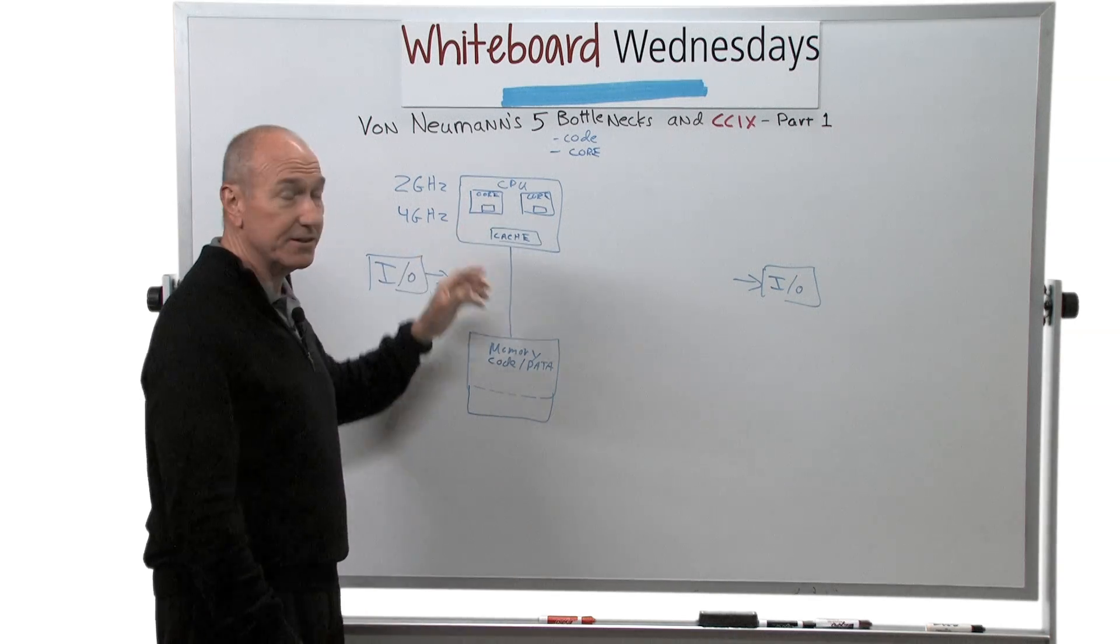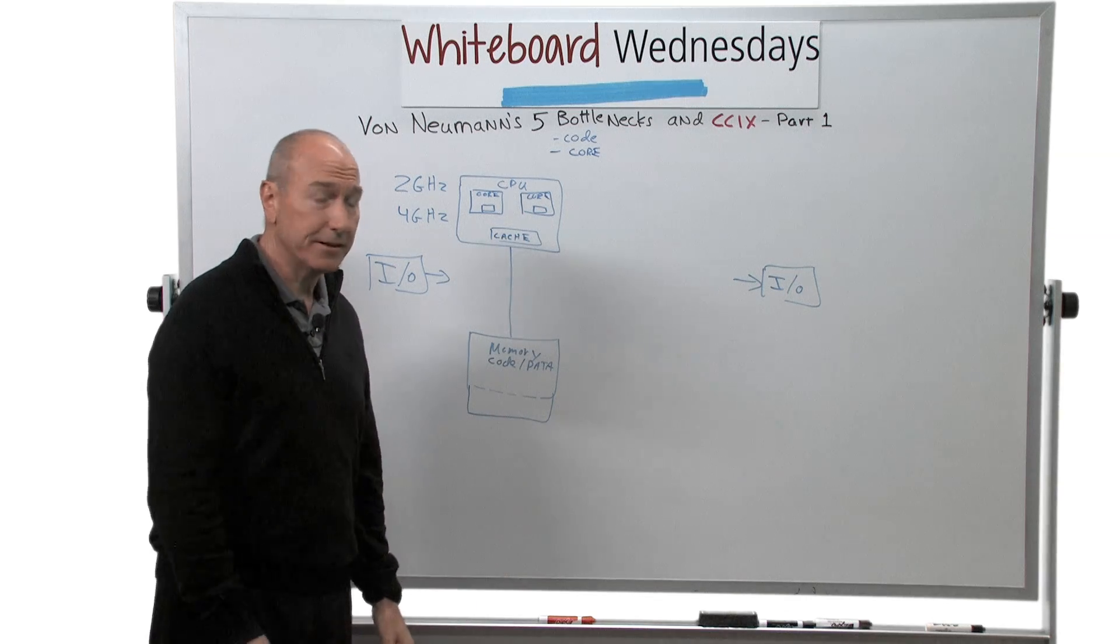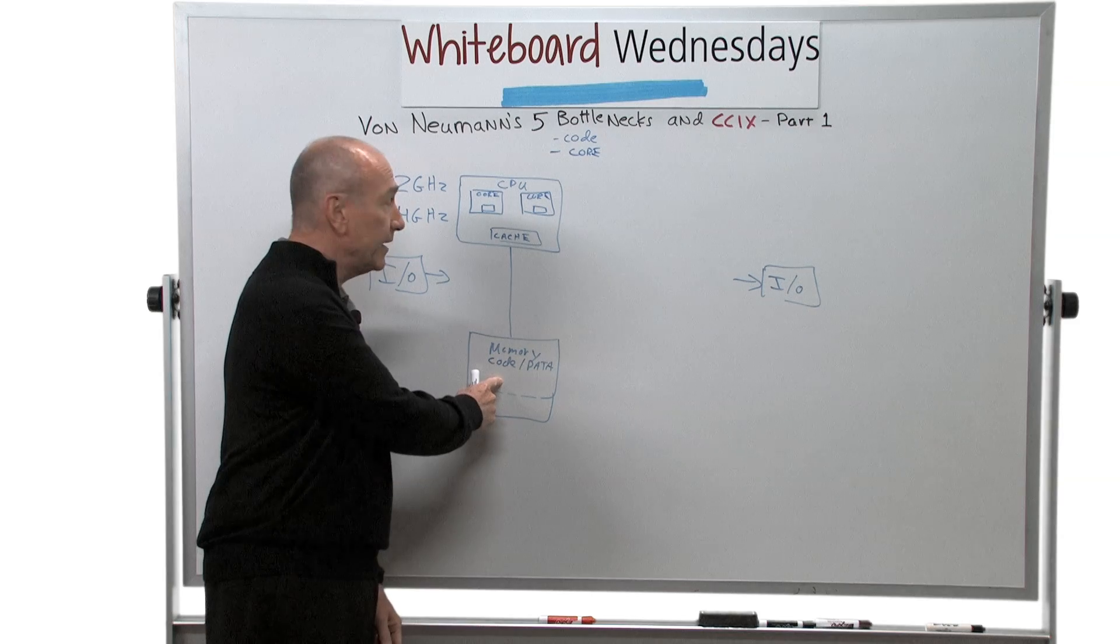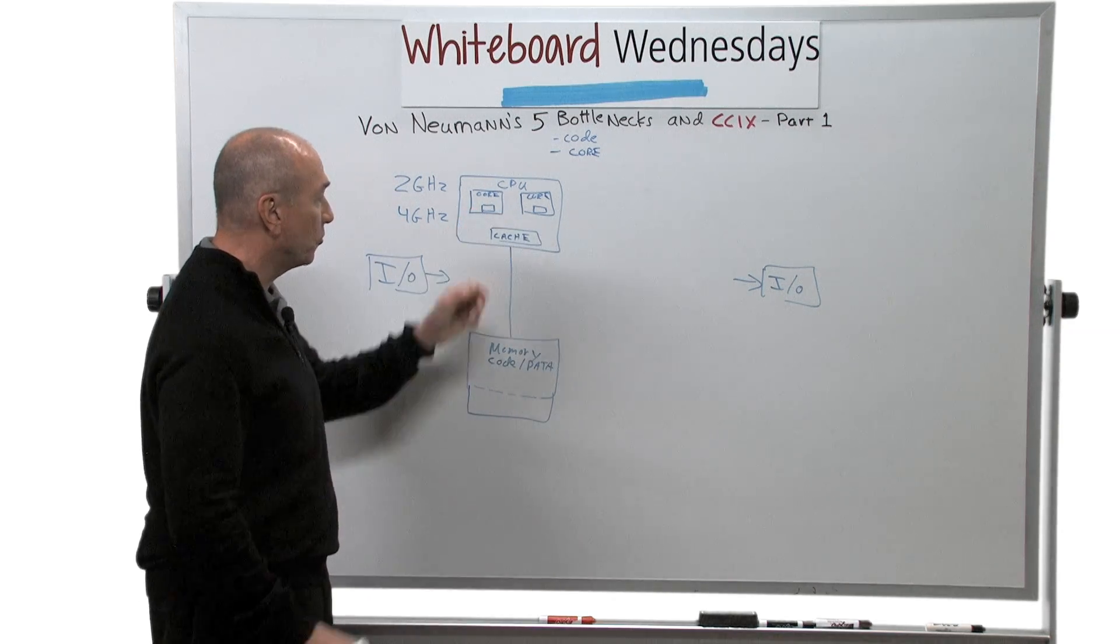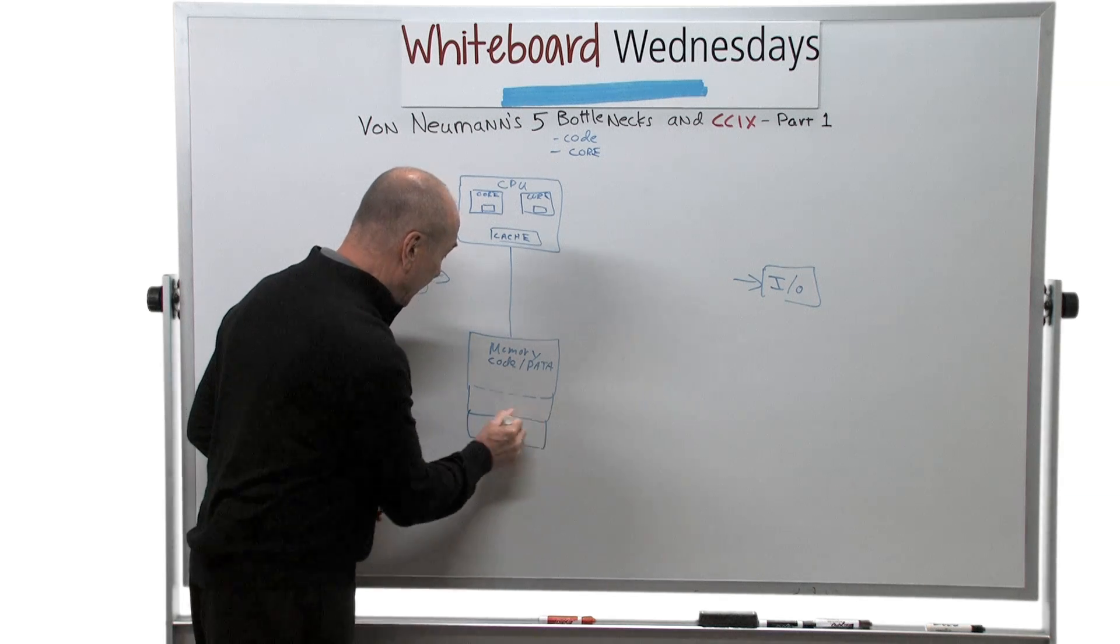So let's say processor one, core one, has just changed a data value. Then core two needs that same data. Well, it can't go to memory and get it, because that's old data. It can't go to this cache and get it, because that data's old. It has to go to the first core. So you need some extra software to manage that.